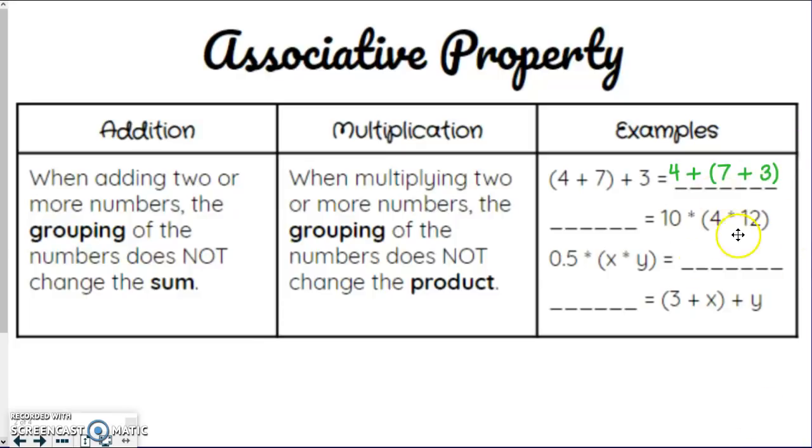Same with multiplication. I'll use this example. This one would be grouping 4 times 12 first to get 48, and then times 10 to get 480. I could do the exact same thing except grouping the 10 and 4 together first, and then the 12. Notice how the numbers are in the exact same order. I did not change the order. I just moved the parentheses, which changes the grouping. So in this one, I would do 4 times 10 to get 40, and then times 12 to get, again, 480.